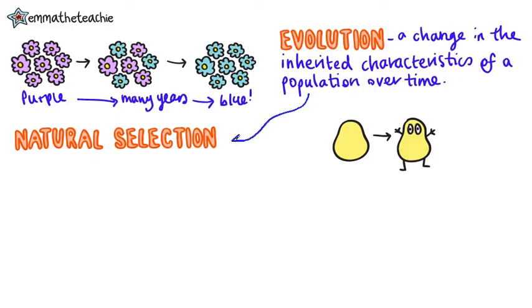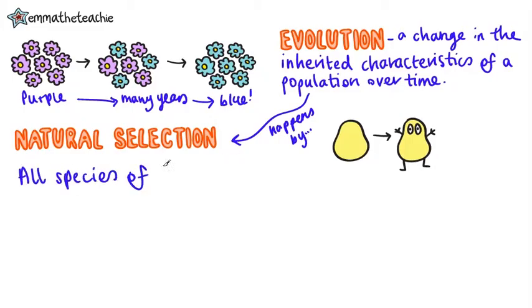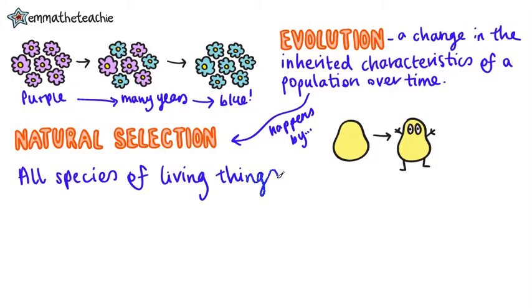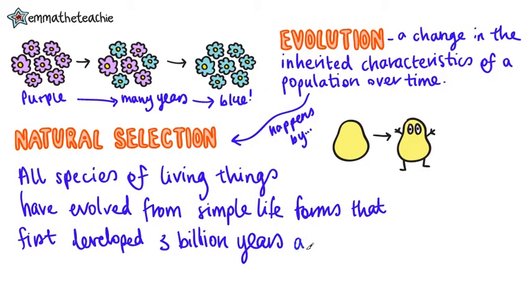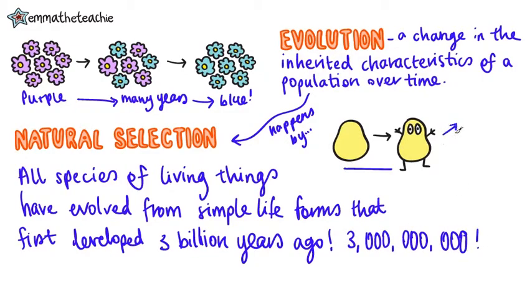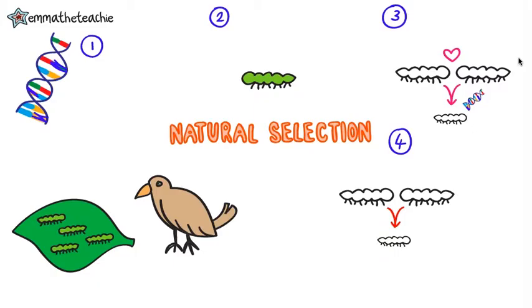Evolution happens by the process of natural selection. This theory states that all species of living things have evolved from simple life forms that first developed over three billion years ago. That's nine zeros — it's a long time, but remember, this is making every species.